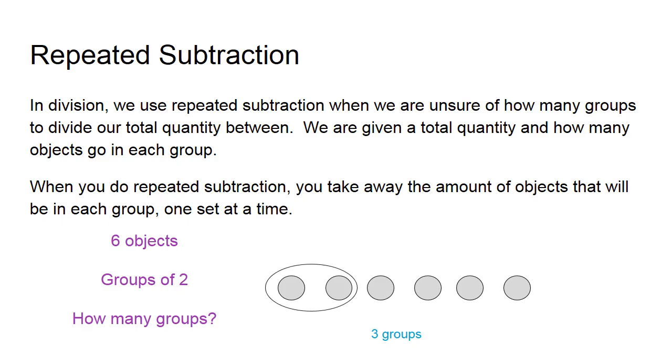So far I have 1 group, 2 groups, 3 groups. I stop here because there are no more counters to put into groups. I can answer the question by counting up how many circles I put around groups of 2. In this case, I have 3 groups.